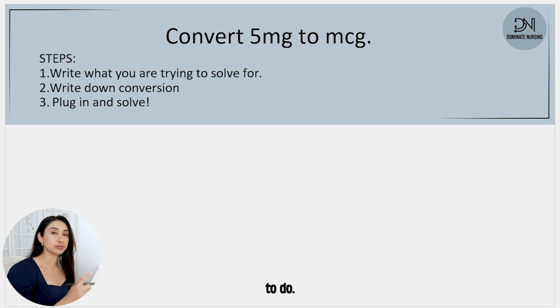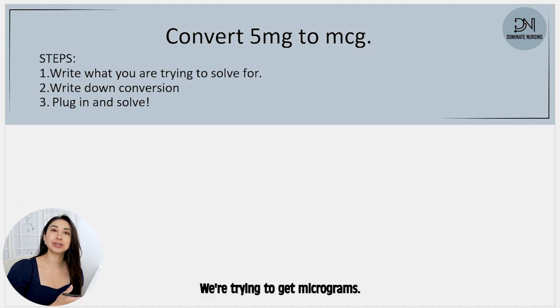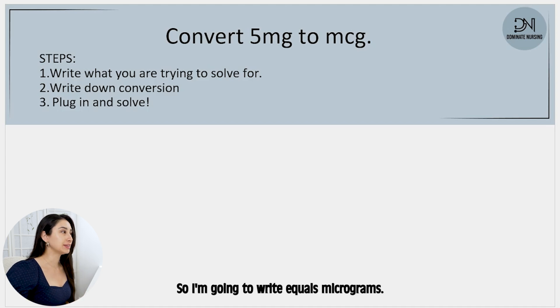This is the first thing that you need to do. Look at the steps. Step one is to write down what you're trying to solve for. So what are we trying to solve for? In this situation, we're trying to get micrograms. So I'm going to write equals micrograms.